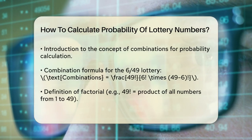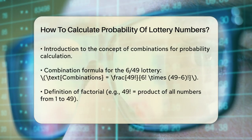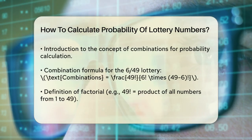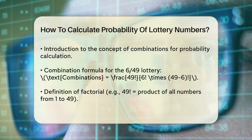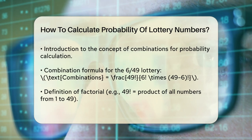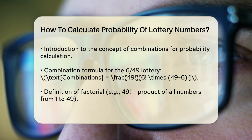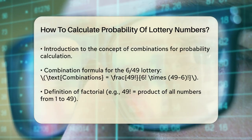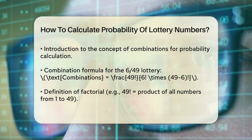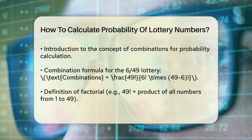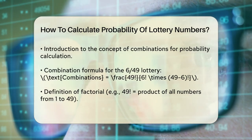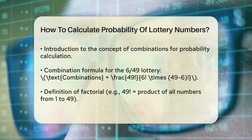The combination formula is C(49, 6) = 49! / (6! × 43!). Here, 49! means 49 factorial, which is the product of all numbers from 1 to 49. Similarly, 6! is the product of all numbers from 1 to 6, and 43! is the product of all numbers from 1 to 43.